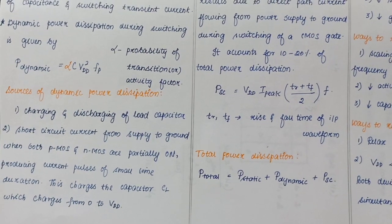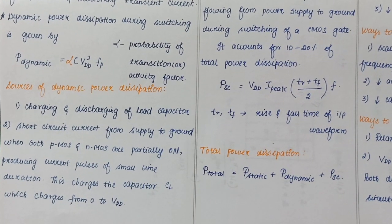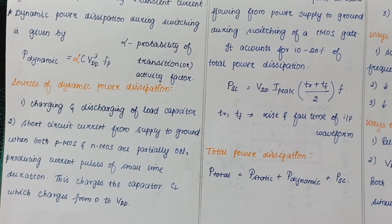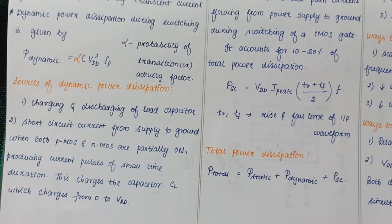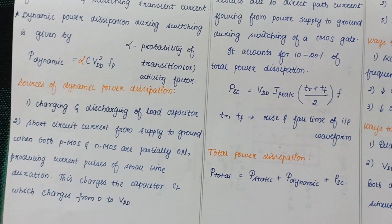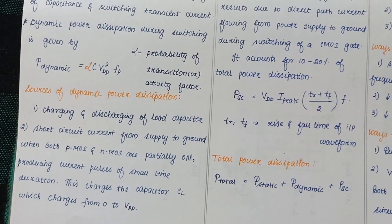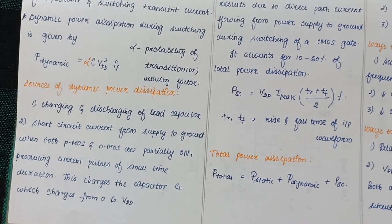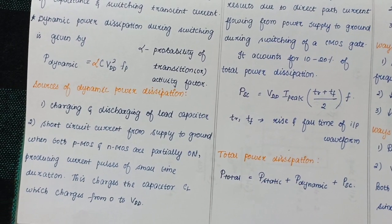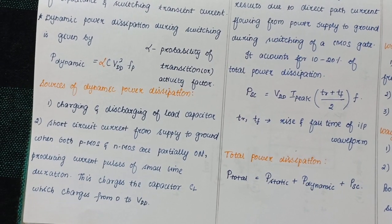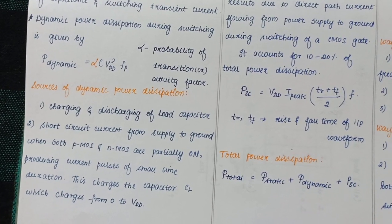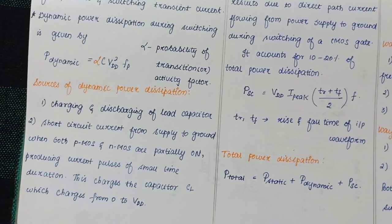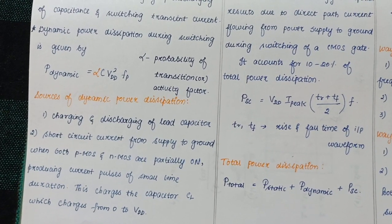Sources include charging and discharging of load capacitor and short circuit current from supply to ground. When we take an inverter with PMOS and NMOS, both transistors partially conduct. The supply voltage will flow towards ground, producing a current pulse of very small duration. This current charges the capacitor from initially zero to maximum charge at VDD, then discharges. This charging and discharging spends power called dynamic power.